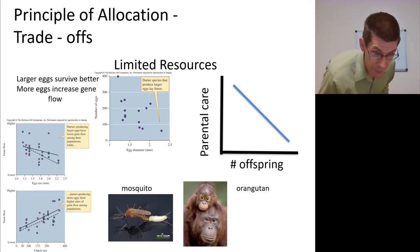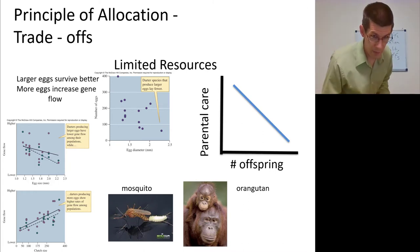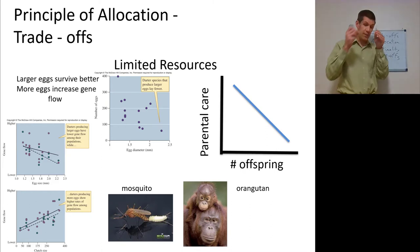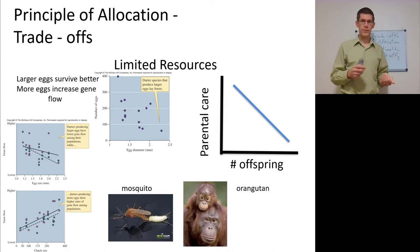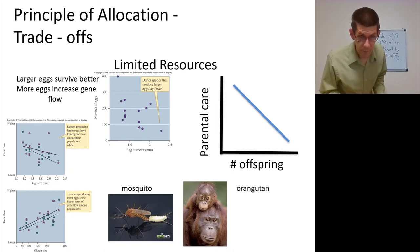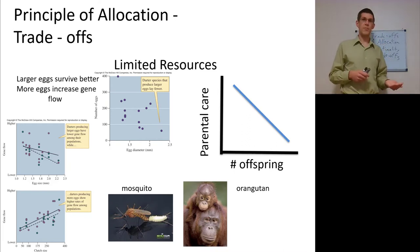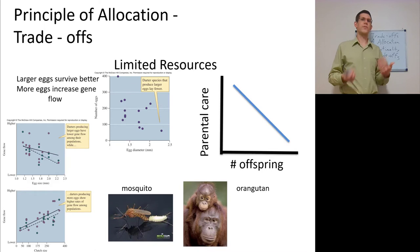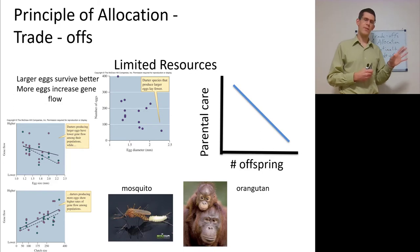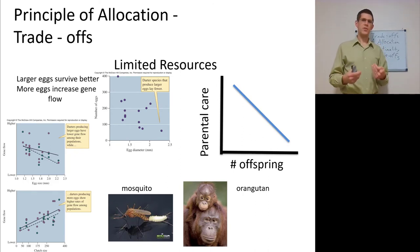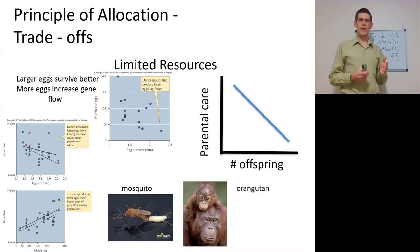Darters producing larger eggs have lower gene flow, while darters producing more eggs have higher gene flow. Gene flow is an optimality trait too — having higher gene flow increases survivorship. Darter species that produce larger eggs tend to lay fewer, so it's gene flow versus egg size. Then you have parental care versus number of offspring: in the egg-size case, parental care is the allocation of resources toward the embryo, while in the orangutan it's post-embryonic. The orangutan represents the high end of parental care, which corresponds to a lower number of offspring.